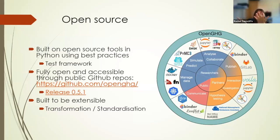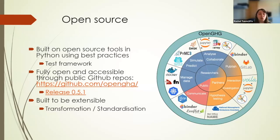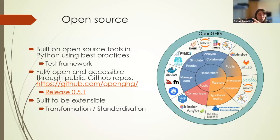The library is available to download via pip or conda, and we've built it with the goal of being extensible — something the community can contribute to. The idea of transformation is central: we take data from various sources and add them to an object store. We can also handle various different database formats and interpret information from them.